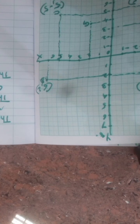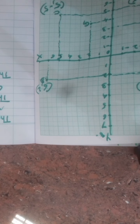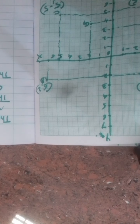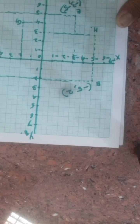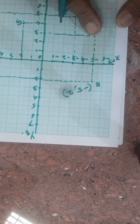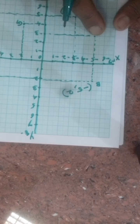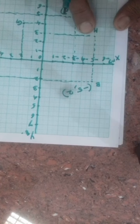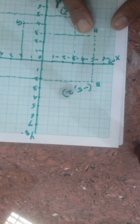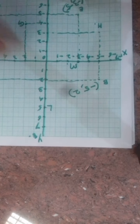The sixth question: what is the ordinate of point H? Ordinate means the y-coordinate. H is here on the figure. Looking at the y-axis, the ordinate of H is minus 3.